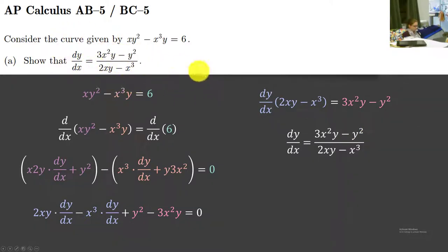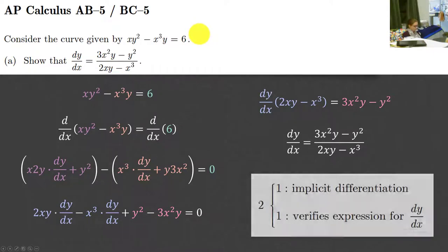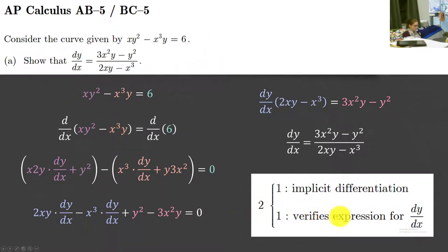How many points do we get for this? Two points: one for doing the implicit differentiation and one for verifying the expression. Which means between parts B and C, we still have 7 points up for grabs.